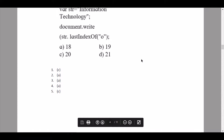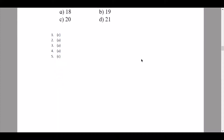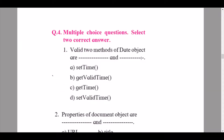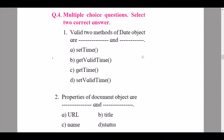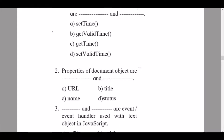Continuing to question 4, multiple choice questions, select two correct answers. Question 1: valid two methods of date object are dash and dash — the answers are set time and get time, so options A and C. Question 2: properties of document object are dash and dash — the answers are URL and title, so options A and B.